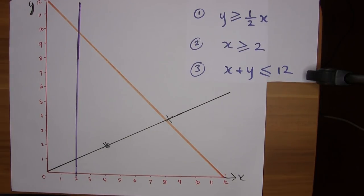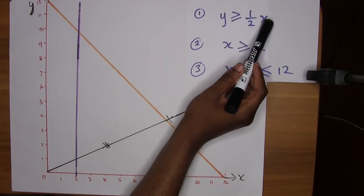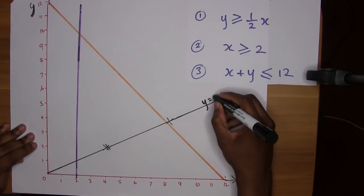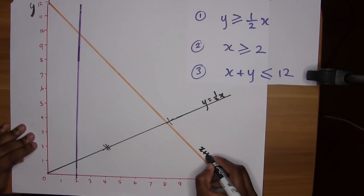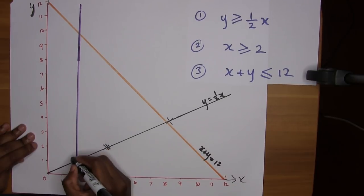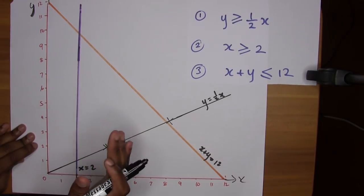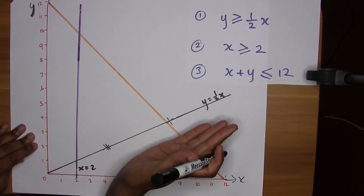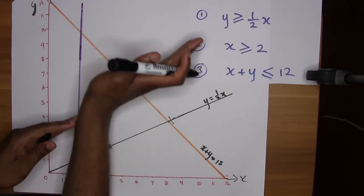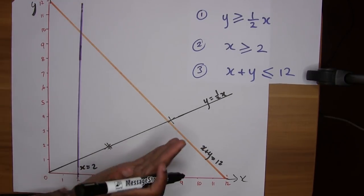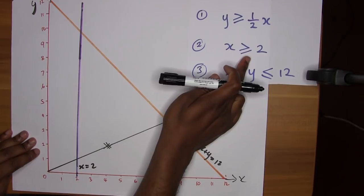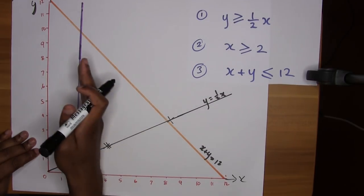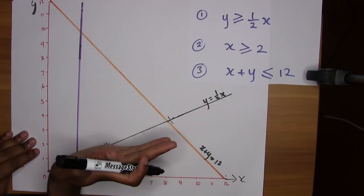That's how you get the lines based off of the inequalities. If you replace the inequalities by equal sign, you'll be able to deduce which line that you need to draw. Now just to select the region which we must shade that satisfies all the inequalities. Y must be greater than this, so this line here stands for y equals half x. This line here is x plus y equals 12, and this line here is x equals 2.